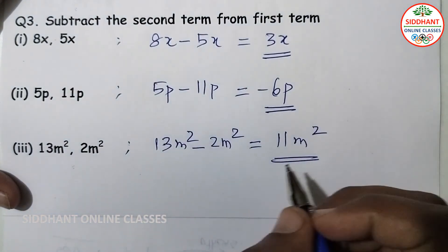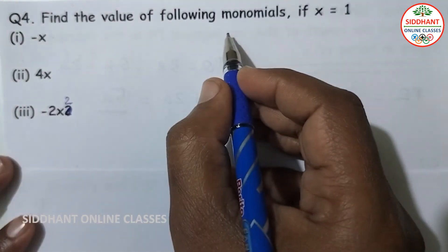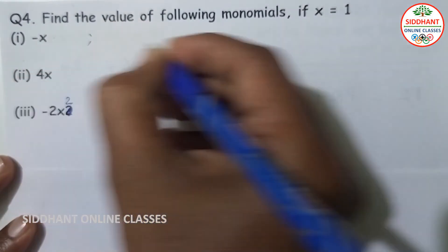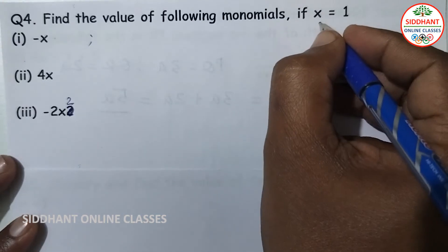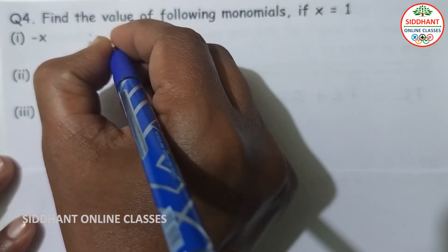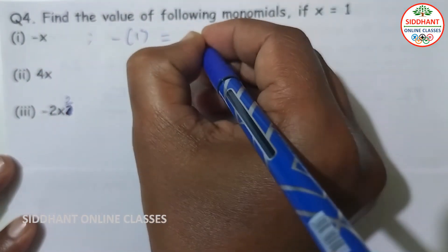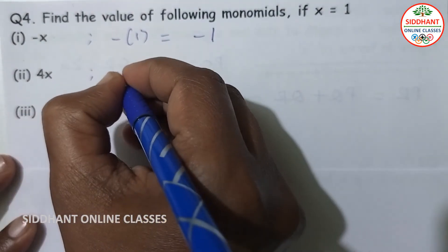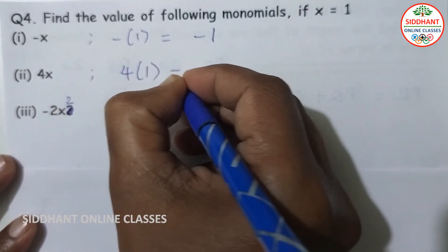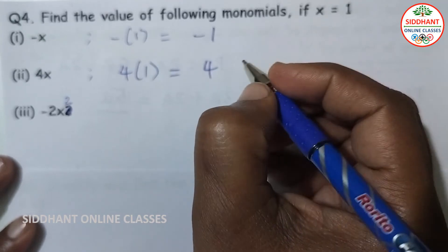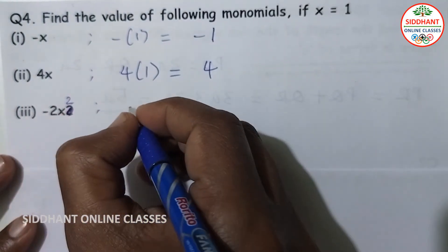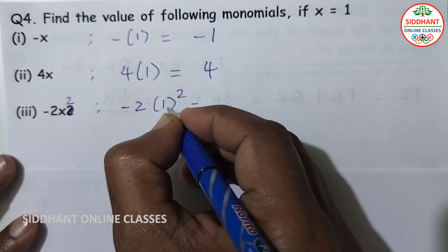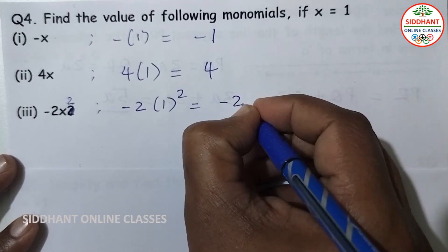Question number 4: find the value of the following monomials if X is equal to 1. First, minus X: substituting gives minus 1. Next, 4X: that means 4 into 1, which is 4. Next, minus 2X square: that means minus 2 into 1 square, which is minus 2.